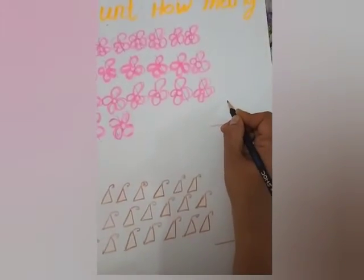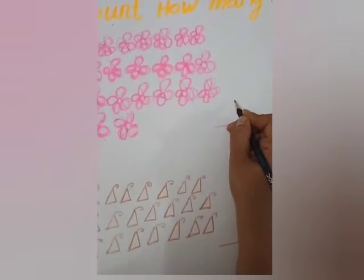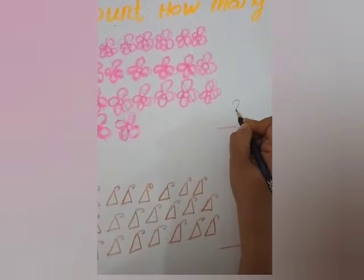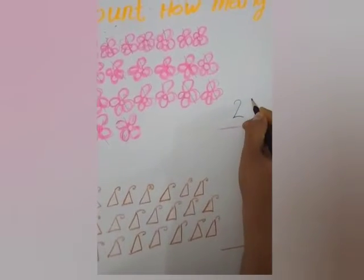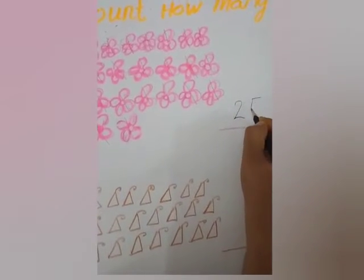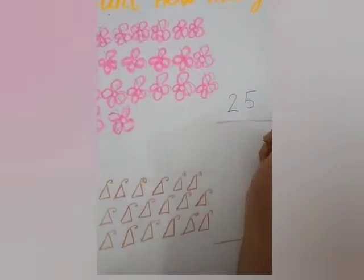How many flowers are here? 25. So we will write 2, 5: 25.